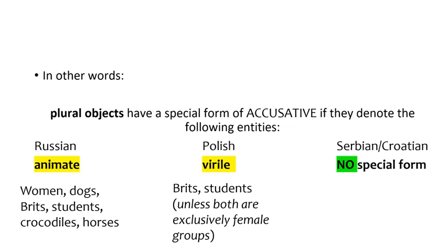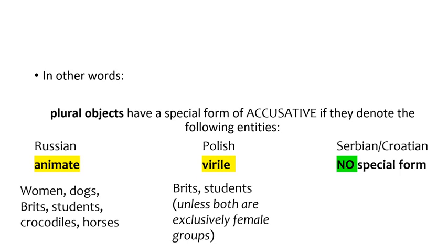Finally, in Croatian and Serbian, there is no special form for animates or entities that include males. So Brits, students, dogs, women, and sofas all have the same ending in the accusative plural.